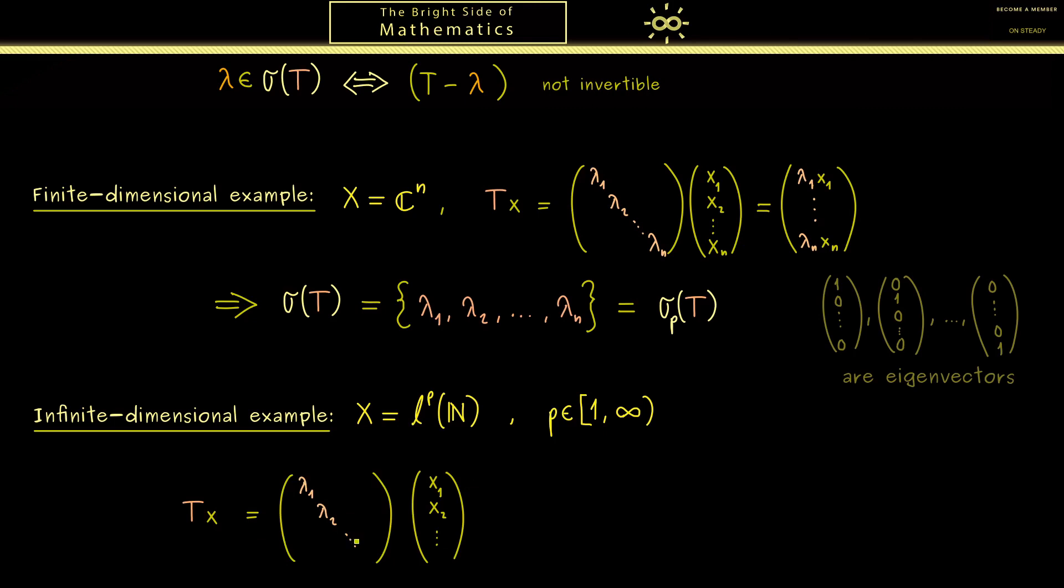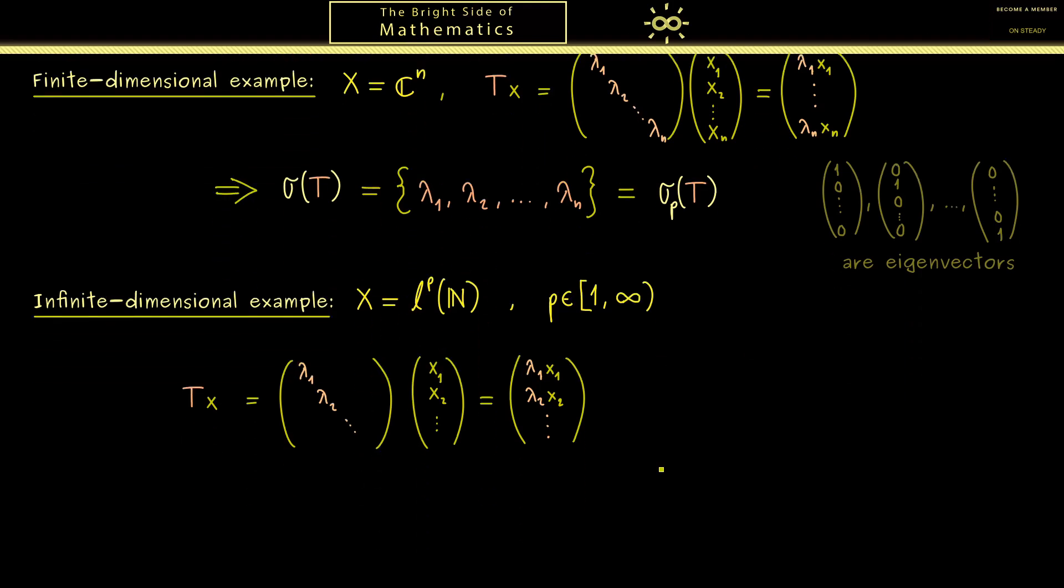Otherwise I want to have the operator T to do the same as before. Therefore we could write this as a one-sided infinite matrix. So you see this is the overall idea to find a generalization of the finite-dimensional example from above.